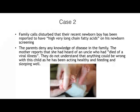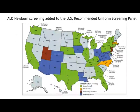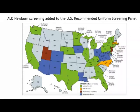Case two is one we're seeing increasingly in frequency in the U.S. A family calls disturbed that their recent newborn boy has been reported to have high very long chain fatty acids on newborn screening. The parents do not know of this disease, nor is there any family history — some reports mention an uncle who had died of a viral illness. They are very distressed because they don't understand how anything could be wrong with their child, who is acting normally. Newborn screening was added to the U.S. recommended uniform screening panel in 2016, and you can see here in green all the states that are testing for ALD, with some pilots and several states still mobilizing efforts.